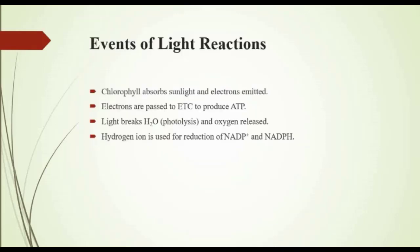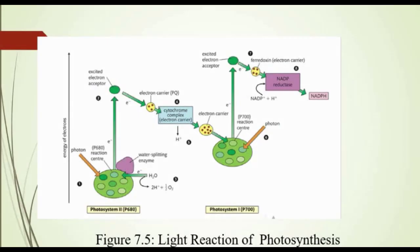The next steps are events of light reactions. When chlorophyll molecules absorb light, their energy level increases and their electrons are emitted. The electrons are passed through the electron transport chain to produce ATP from ADP. Sunlight also breaks water molecules — this is called photolysis. Photo means light and lysis means breakdown. Due to photolysis, oxygen is released and leaves the chloroplast. The hydrogen atoms of water give electrons to chlorophyll and become ions.